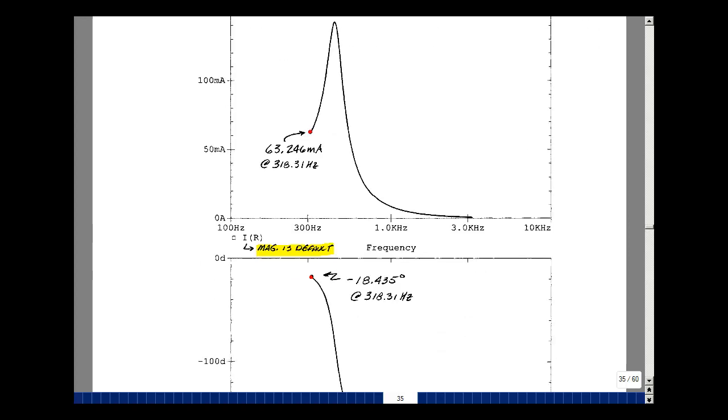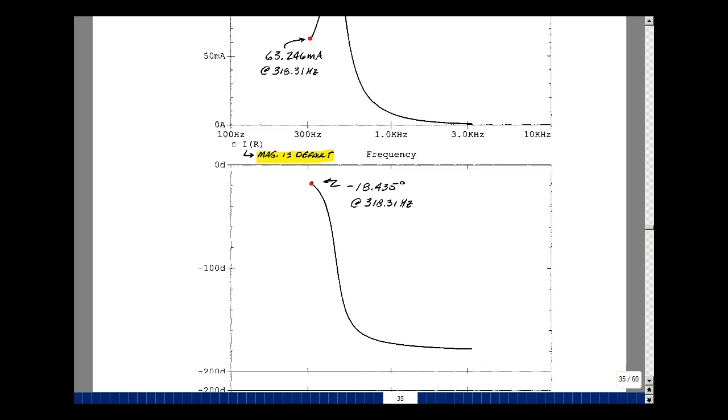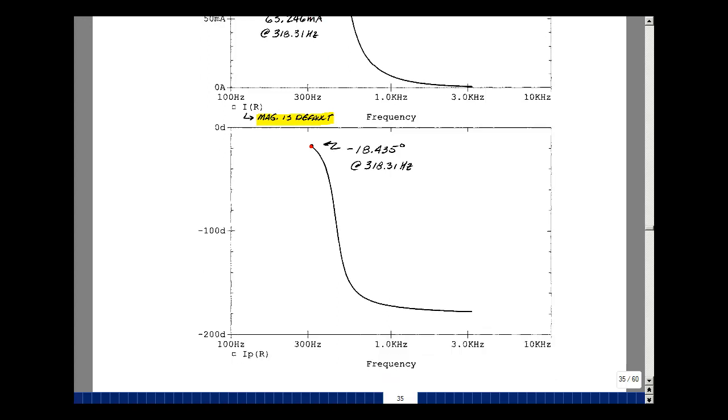One other point I want to make is that the magnitude of the phasor is the default. So if you don't specify the m, you still get the magnitude of the phasor. So you can get that in the dialog box. Just the phase angle, you have to type the p. So I'll type i p of r, and I get minus 18.435. That's exactly what we hand calculated.